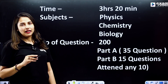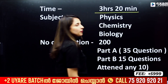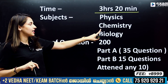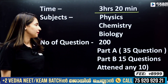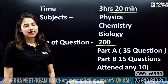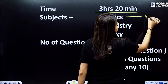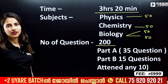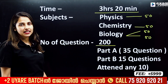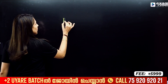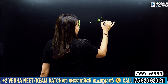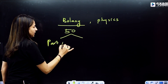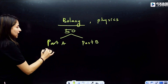If you have a test booklet, you can check the exam details. There are 200 questions in total. In Physics, you have 50 questions. In Chemistry, you have 50 questions. In Biology — that is, Botany and Zoology — you have 50 questions each, making a total of 50 questions per subject.